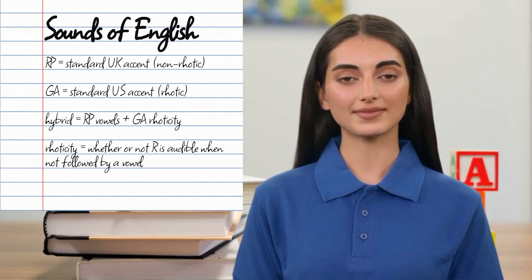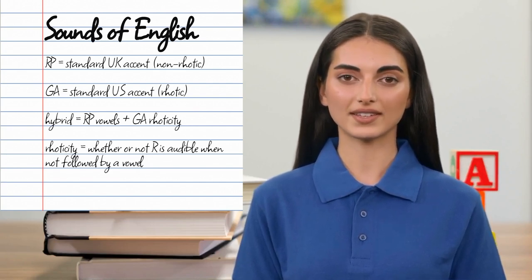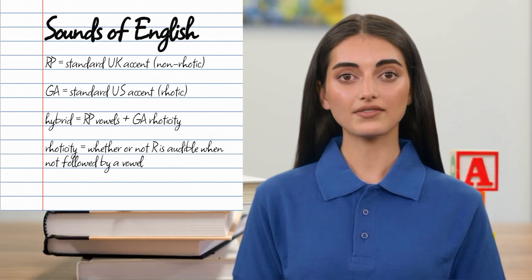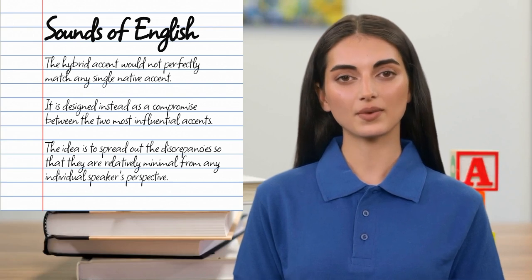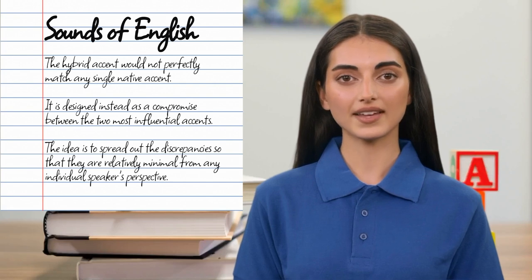It essentially combines a British vowel roster with American roticity. What is roticity? A rotic accent pronounces the R sound in virtually all positions, while a non-rotic accent reliably drops the R sound whenever it's not immediately followed by a vowel. In a nutshell, the proposed hybrid accent makes all vowel distinctions that a typical British speaker would, but includes an audible R sound everywhere a typical American would.